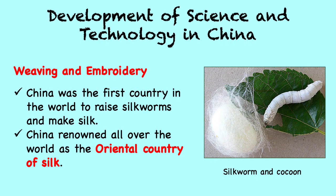China was also the first country in the world to raise silkworms and make silk, the practice known as sericulture. In the 16th century BC, during the Shang Dynasty, woven pattern technology and braid embroidery appeared. After the 2nd century BC, with the invention of the reeling car, the spinning wheel, and the oblique loom, textile technology and embroidery evolved rapidly. People at that time could not only weave, but they could also create wonderful embroidery, which made China renowned all over the world as the oriental country of silk.